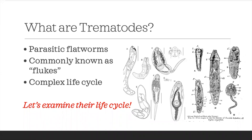A trematode is a parasitic flatworm, also known as flukes. They have a very complex life cycle, where in order for them to complete their life cycle, they must infect more than one host. They can't skip any of these stages, or else they just won't be able to reproduce sexually.